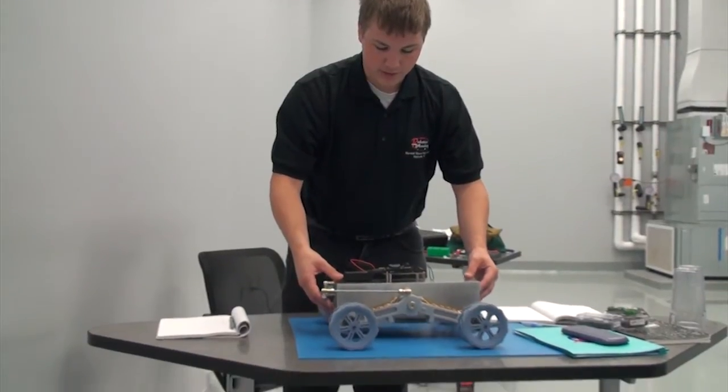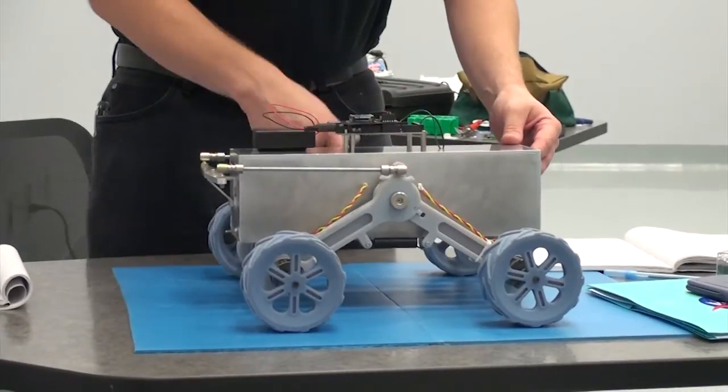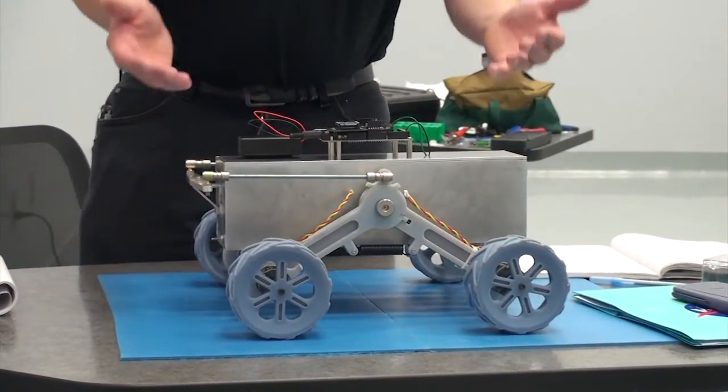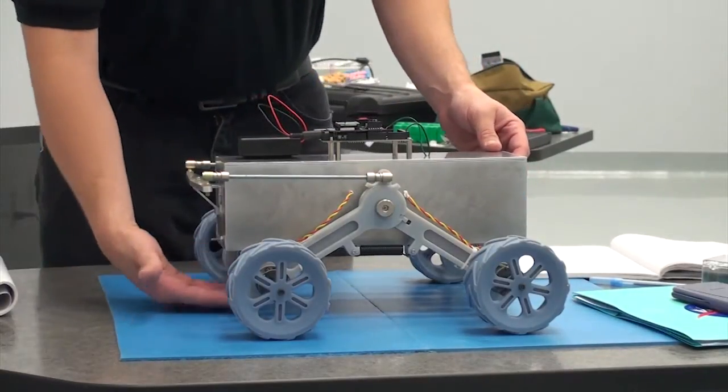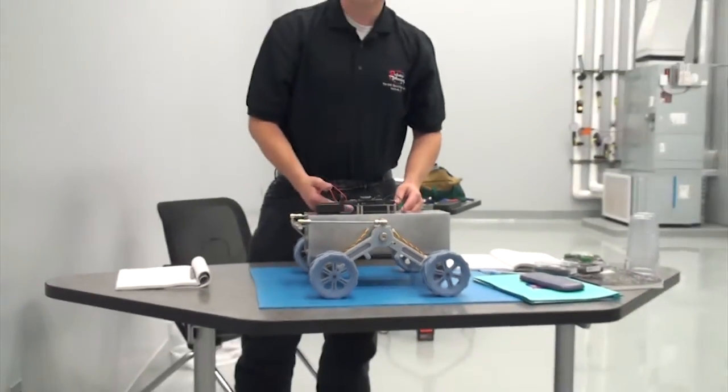And what you'll see there is it's going to lift up on its own and the mechanism will lock in place automatically. Now we have a rigid suspension system that can do the driving force and we also have ground clearance which is key. We have seven and a half centimeters of ground clearance which allows us to travel over rocks.